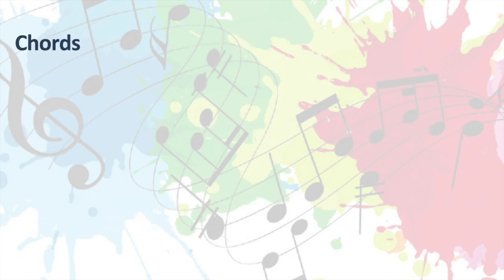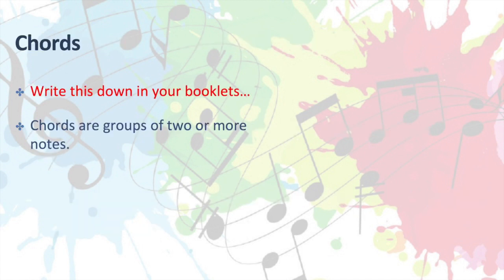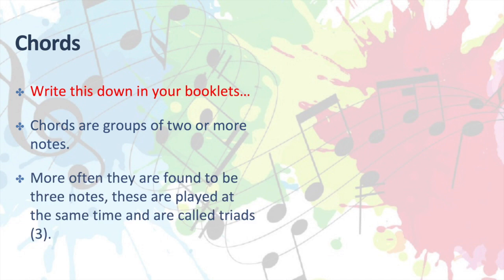Chords. So write this down in your booklets or on your paper. Chords are groups of two or more notes. More often they are found to be three notes. These are played at the same time and are called triads. Now remember that 'triad' means three — things like 'Trinity' would also mean three.